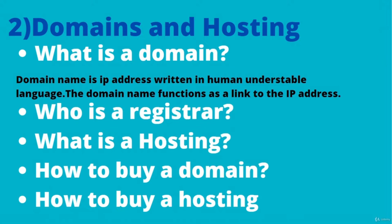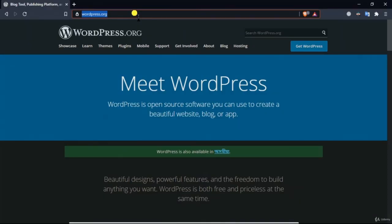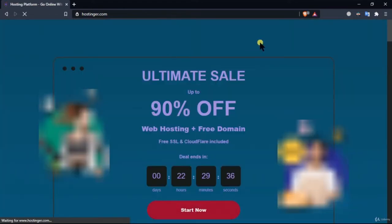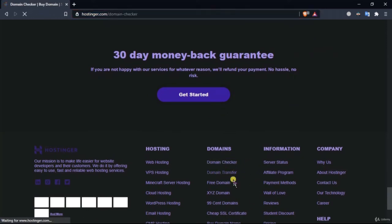In this lecture we are going to learn what is a domain. A domain name is just an IP address written in human-understandable form. The domain name functions as a link to the IP address. Think of a domain name like a phone directory where you write names instead of phone numbers — you find people's phone numbers using their names. That is how a domain name works. Let me show you a really popular website, hostinger.com.